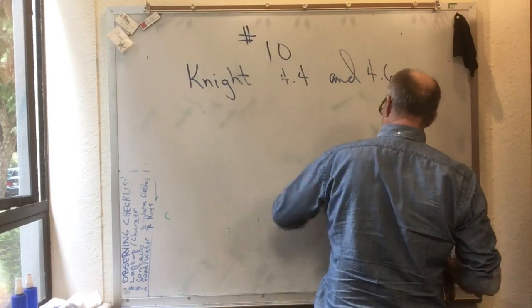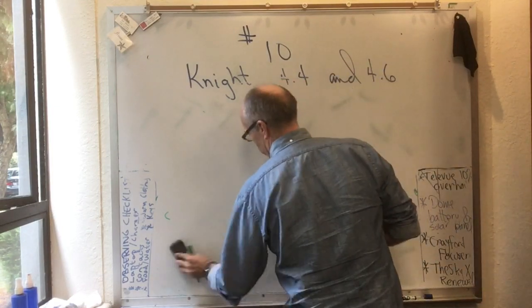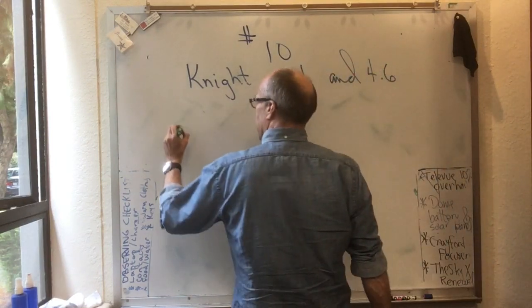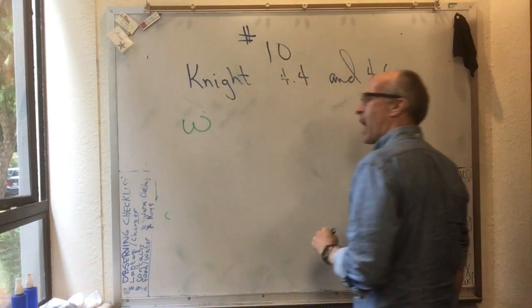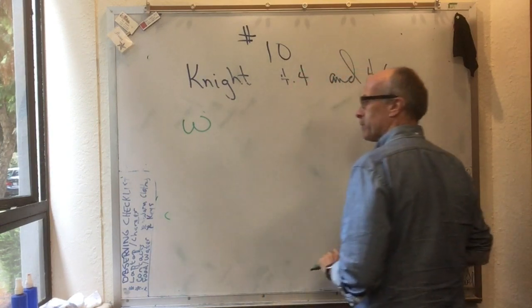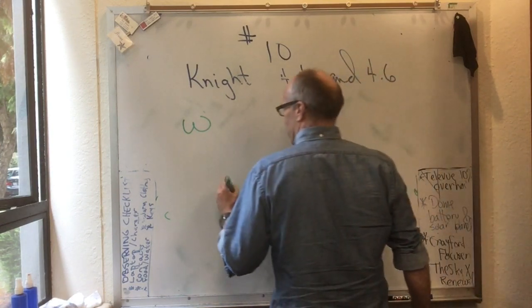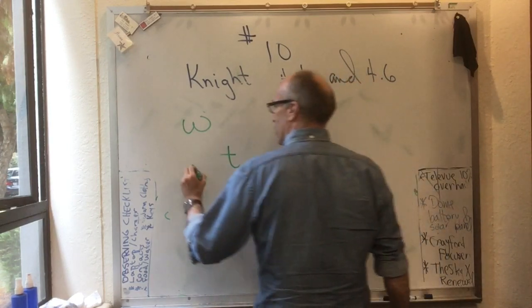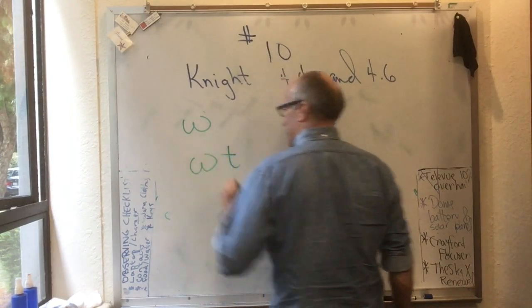In Knight 4.4, there are some other things that we could define. If something has a constant angular velocity omega, that means that in a time t, it's going through an angle omega t.